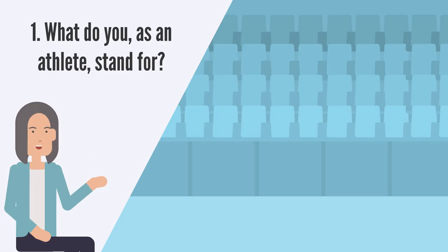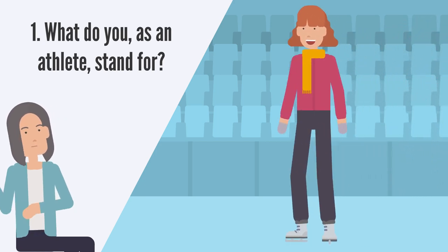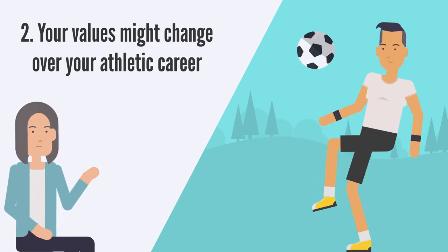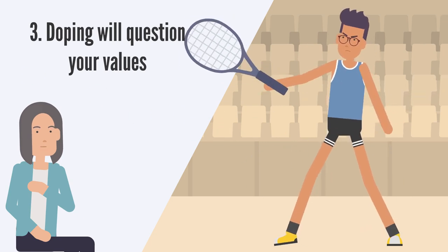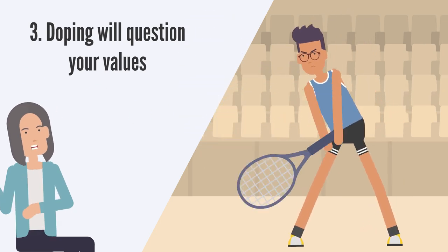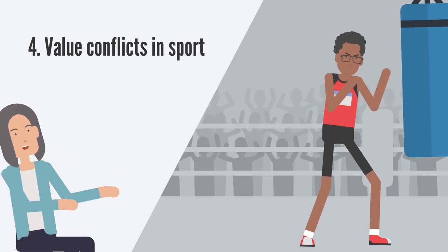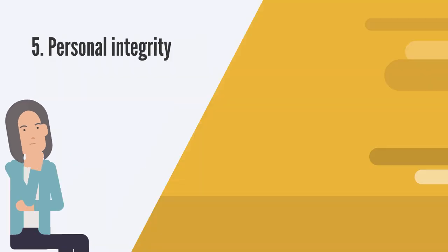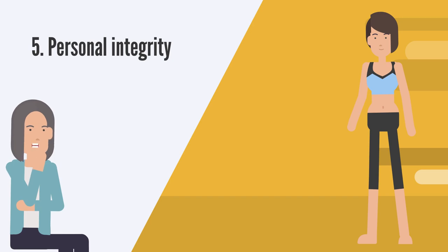The first module asks athletes to reflect on what they stand for and what is important to them as an athlete. The second module recognizes that athletes' values might change over their athletic career. The third module warns athletes that dealing with doping in their environment will question their values. The fourth module concentrates on conflicts and explains that value conflicts are both normal and common. The fifth module takes a holistic view through personal integrity, and talks about congruence or conflict of values on and off the pitch.